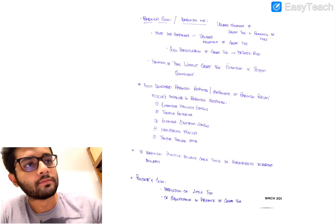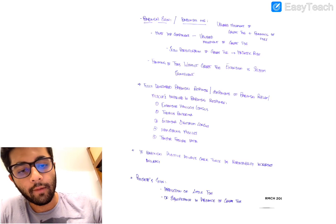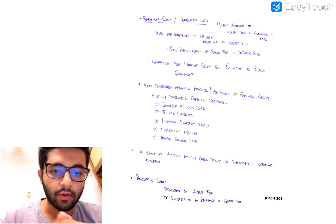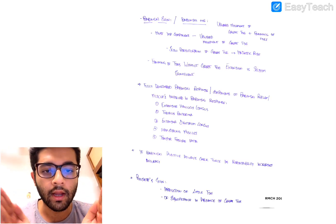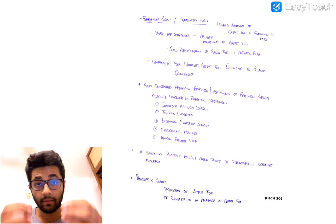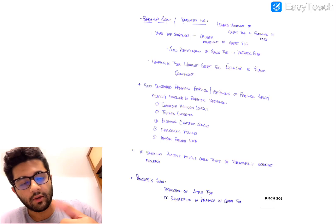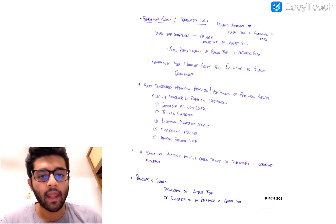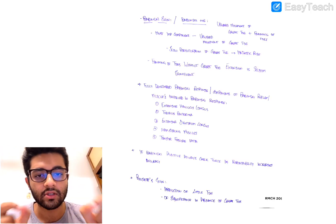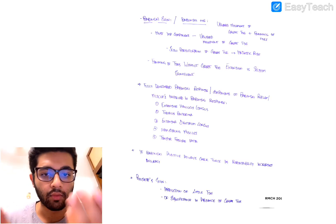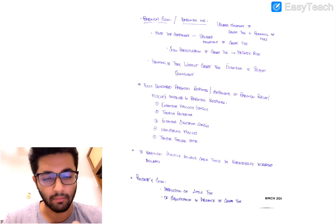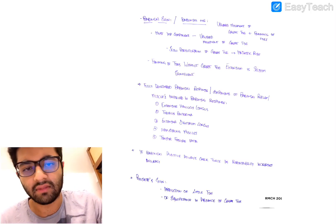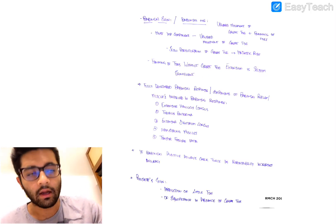Coming to the Babinski sign itself: everyone stresses on the fanning of toes, but the most important component indicating a positive Babinski is the upward movement — dorsiflexion — of the great toe. Fanning of the toes may or may not accompany this; it was added later and is not mandatory. The most important sign is the upward movement of the great toe.